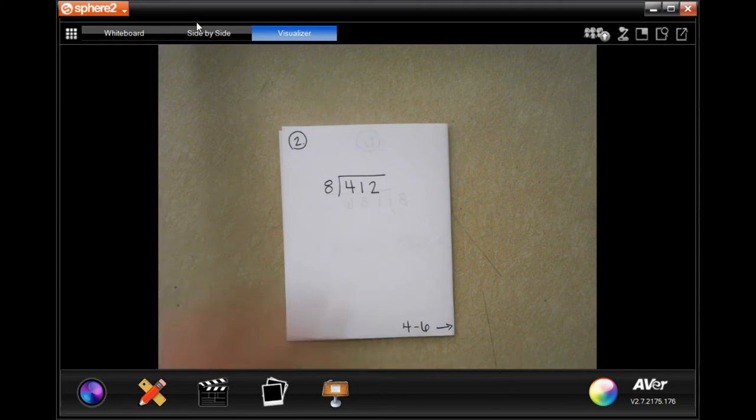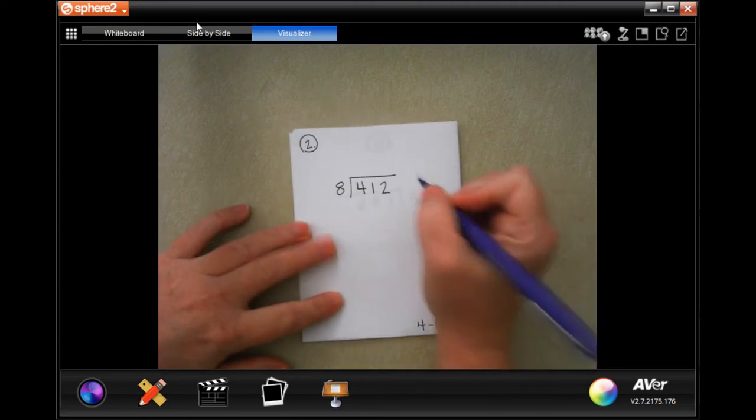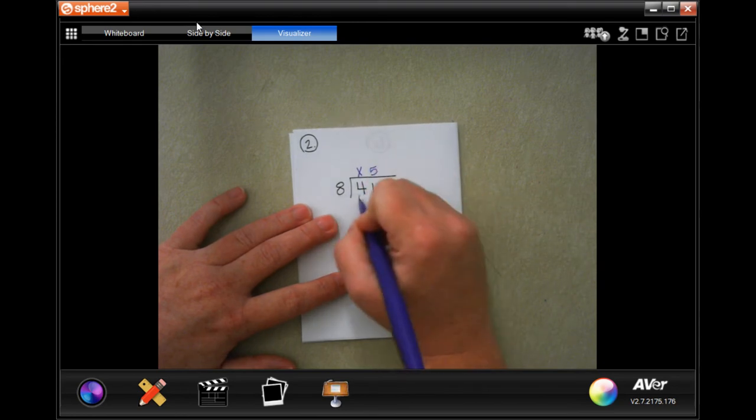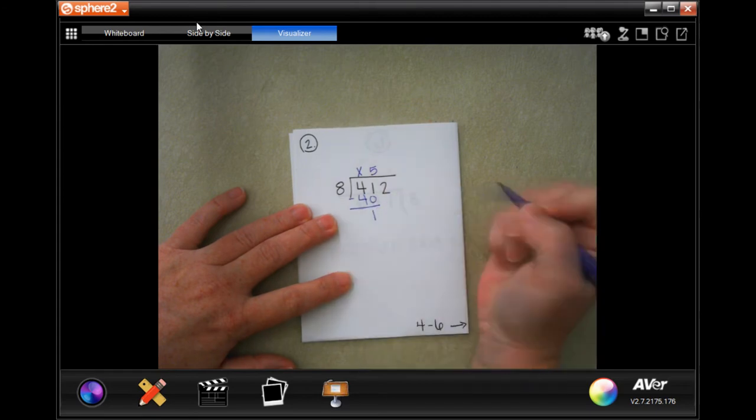So, we are going to go ahead and get started. 8 is not going to go into 4. Placeholder. 8 will go into 41, 5 times. 5 times 8 is 40. Get 1. 1 is smaller than 8. I can bring down my 2.